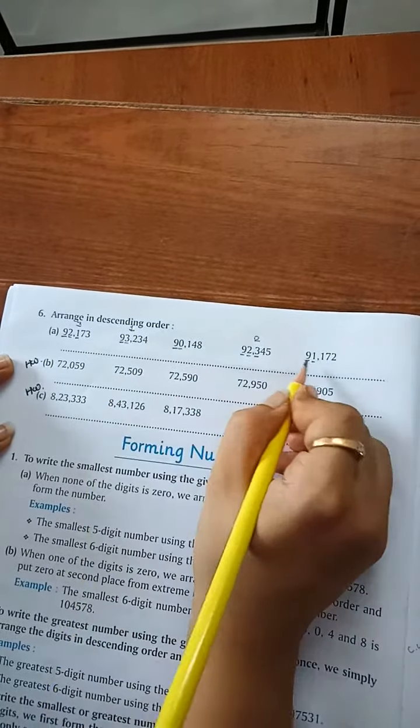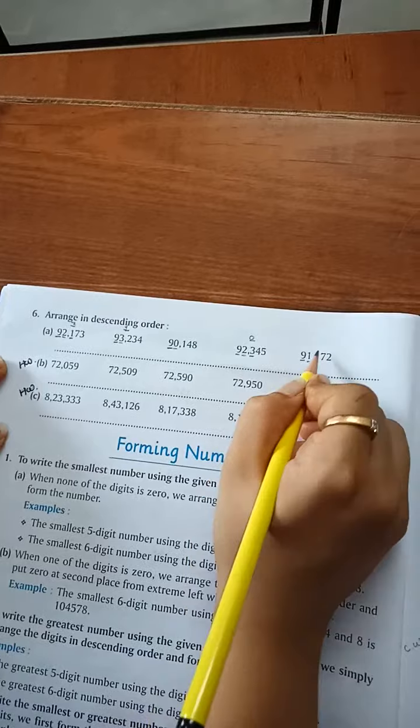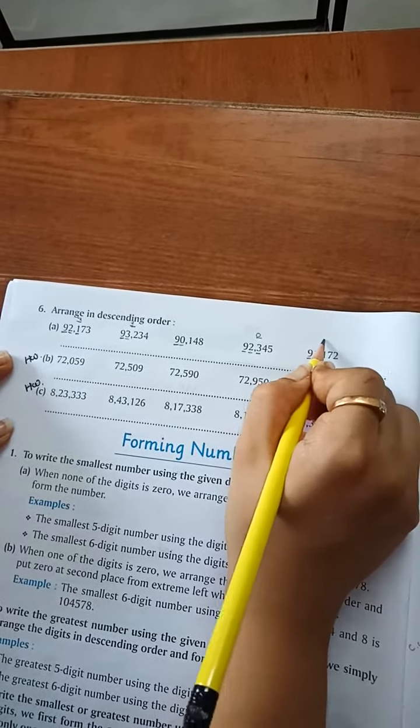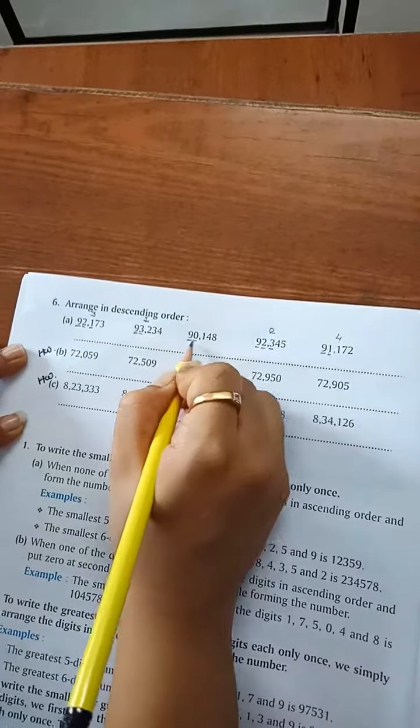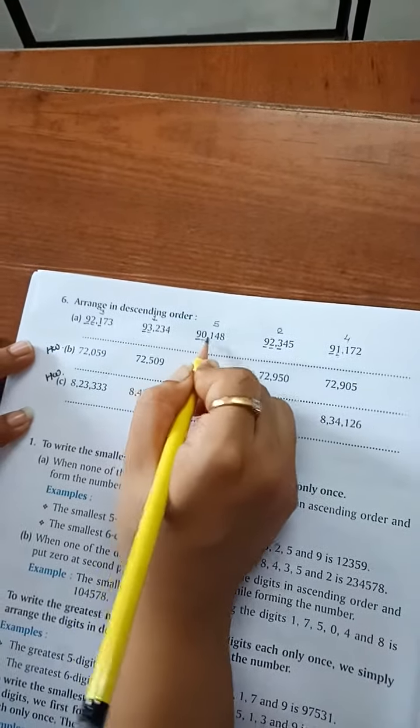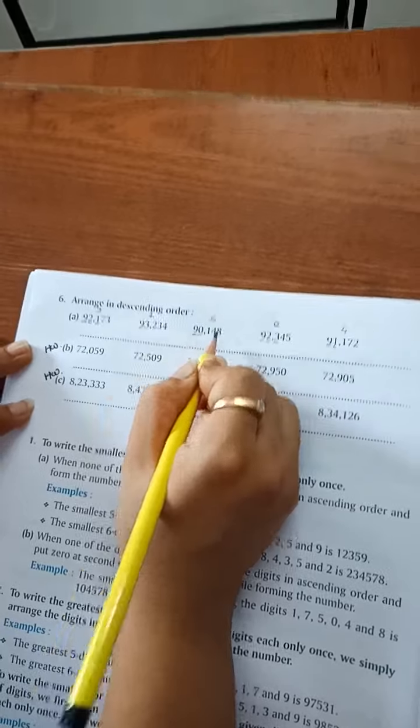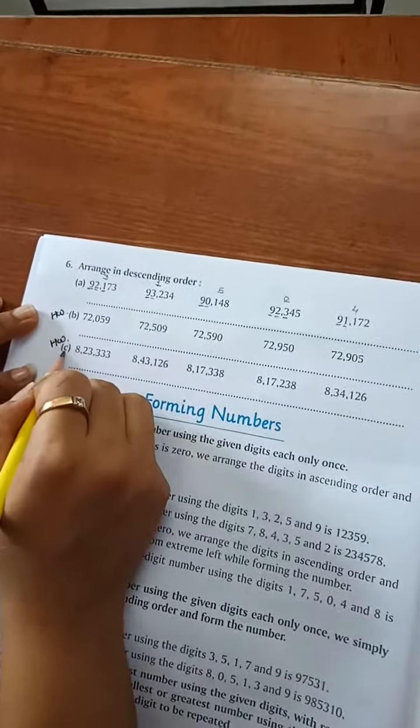Now, 0, 1. Which is the biggest number? 1. At fourth place, 91,172. And at last place, fifth place, 90,148. Homework.